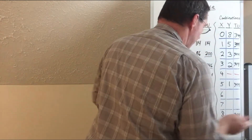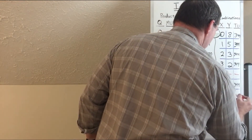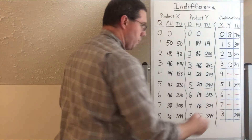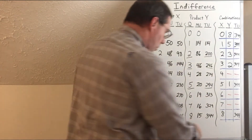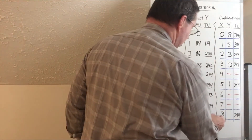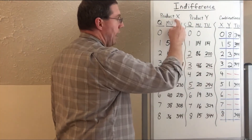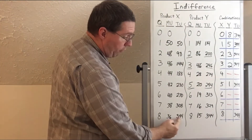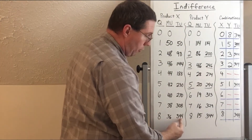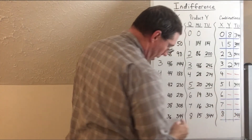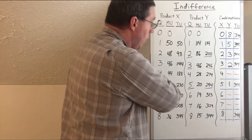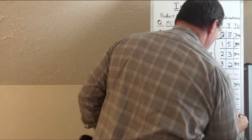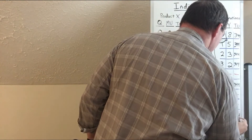We won't find any combination that includes six of X or seven of X. But our last one: eight units of X gives us 344. So 344 minus 344 is zero, and zero units of product Y gives us zero utility. That's our final valid combination.